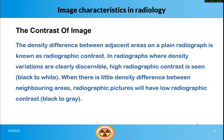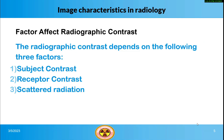The density difference between adjacent areas on a plane radiograph is known as radiographic contrast. In radiographs where density variations are clearly discernible, high radiographic contrast is seen (black to white). When there is little density difference between neighboring areas, radiographic pictures will have low radiographic contrast (black to gray). Radiographic contrast depends on three factors: subject contrast, receptor contrast, and scattered radiation.